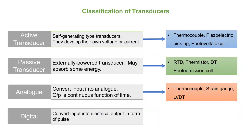One more classification is analog and digital type. In analog transducers, they convert input into analog output as a continuous function of time — like an analog watch. In digital transducers, they convert input into electrical output in the form of pulses — like a digital watch.